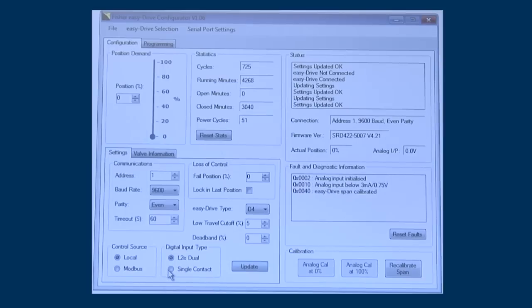Within the settings box, make sure that the control source is set to local. Once local is selected, the choice of either single dry contact or L2E dual contact is presented. Select the option that best applies to your application and then click update.